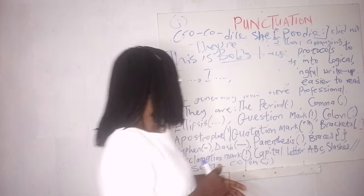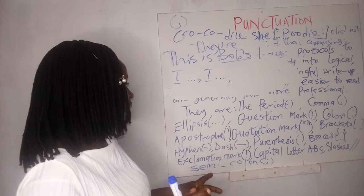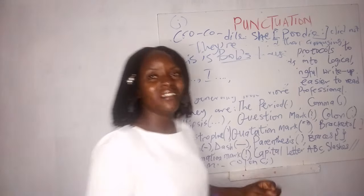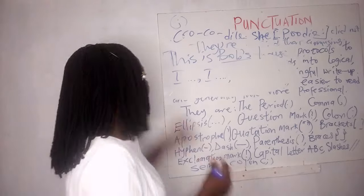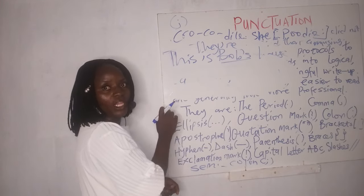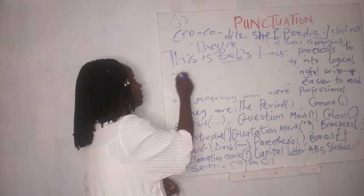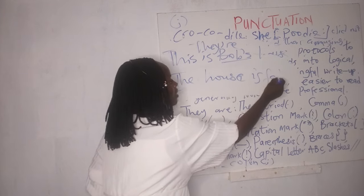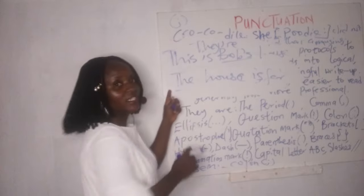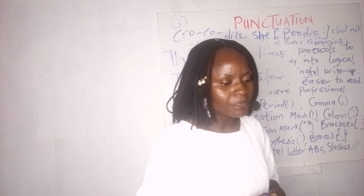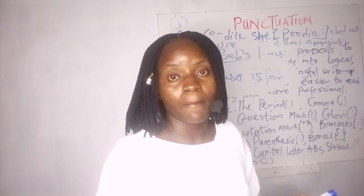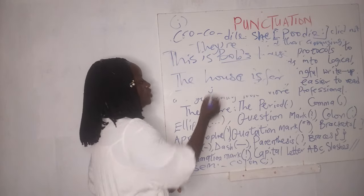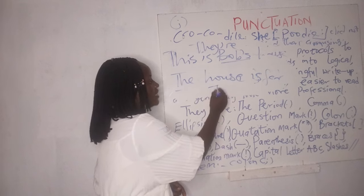Now let me talk about your capital letter. Use your capital letter to begin a sentence — you do not start a sentence with a small letter. For example: 'The house is far' — capital letter T. You also use a capital letter to begin a proper noun or a name. For example, you write 'James' or 'Jennifer' — you start with a capital letter J, not a small letter j.